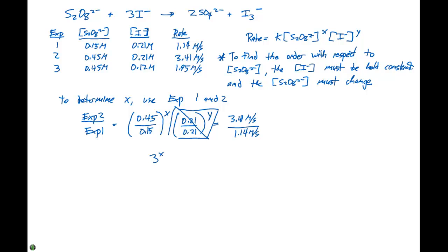So we have 0.45 divided by 0.15, which is going to be three. Three to the X power is going to equal 3.41 divided by 1.14, which is also three. If we take the natural log of both sides, we can bring X down in front: X times the natural log of three equals the natural log of three. So X equals one — this reaction is first order with respect to S₂O₈²⁻.